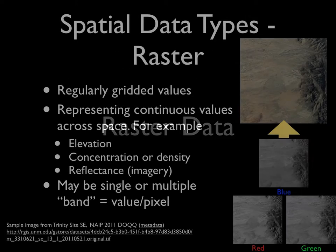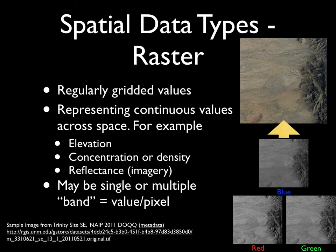Starting with raster data, I'd like to highlight some of the key characteristics of raster data as a geospatial data format. This is as a complement to vector data, which are discussed in a separate but related presentation. Raster data typically represent regularly gridded values across space — they are essentially a subset of continuous values partitioned into values at regular intervals in an X and Y dimension, creating what you might think of as an image representing those continuous values as discrete values at regular intervals.